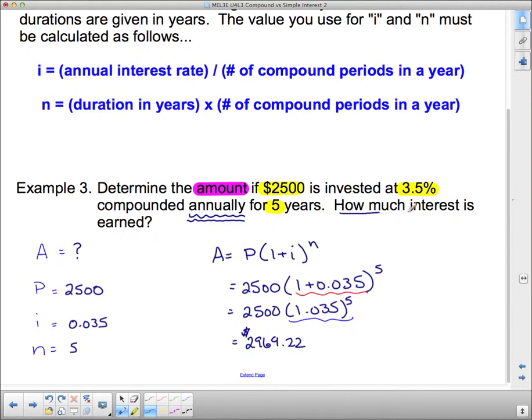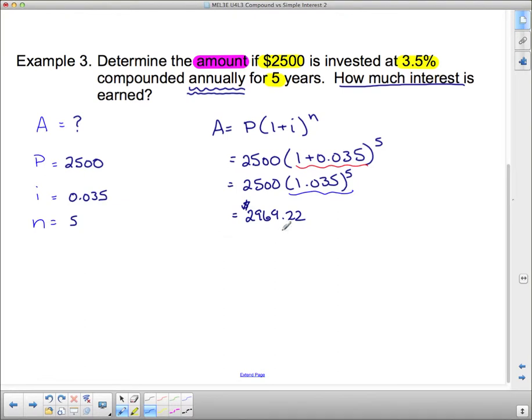Now, this says how much interest is earned. This is the total amount of money I have. So if I want to know the interest, I have to figure it. I have the interest equals the amount minus the principal. So I have to actually take the amount I have, 2,969.22, and subtract what I invested, which was $2,500. Which means that I have $469.22 in interest.